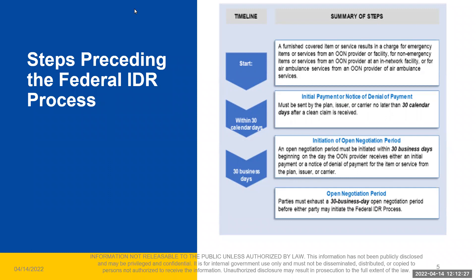With the initial payment or the denial of payment that payers are sending, it's required to include a statement that the QPA applies for the purpose of the recognized amount. The interim final rules require that a statement from the plan or issuer that the QPA applies for purposes of the recognized amount so that providers and facilities will understand that the plan or issuer has determined that neither an all-payer model agreement or specified state law applies for purposes of calculating a participant's cost-sharing amount, but rather this cost-sharing amount would be calculated using the QPA. The departments expect that in most, if not all cases, the QPA will serve as the basis for determining the recognized amount and the federal IDR process will govern any dispute over the payment instead of a specified state law or process.